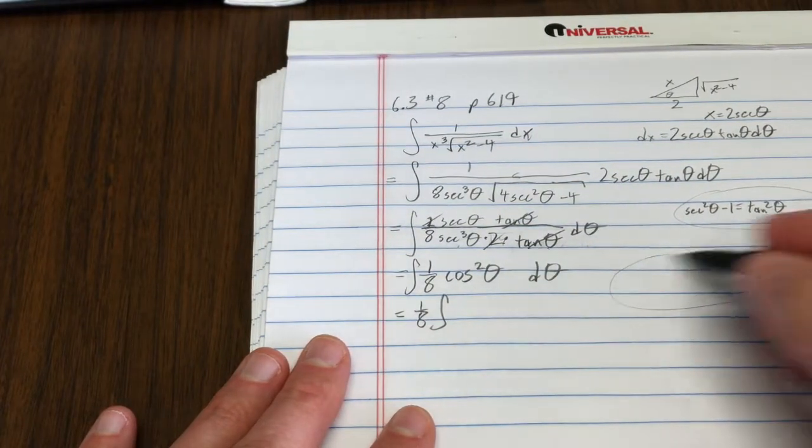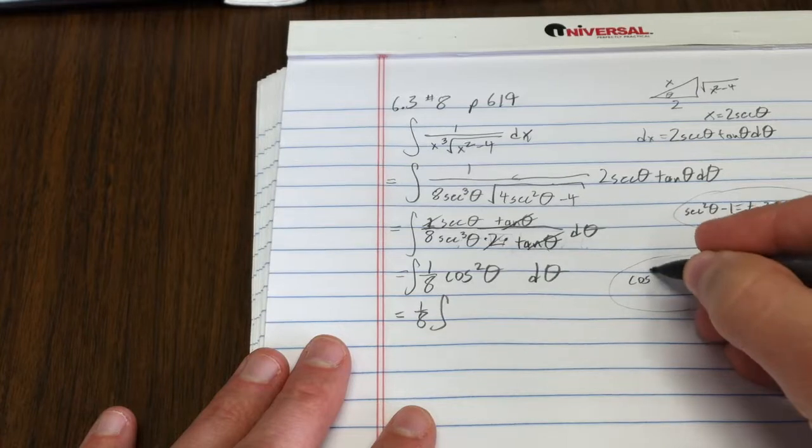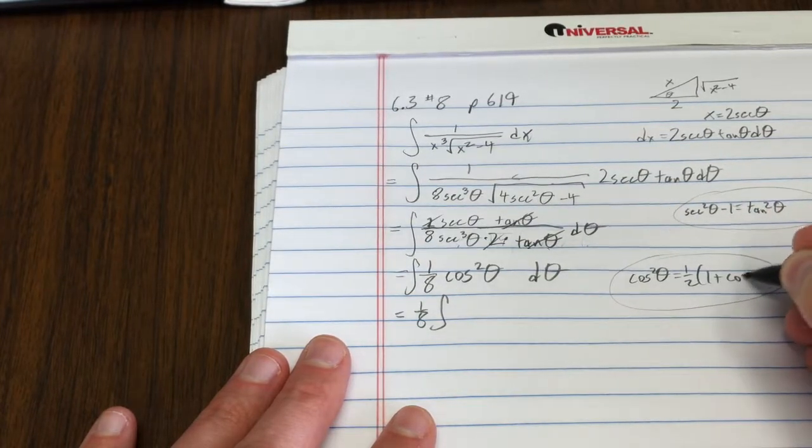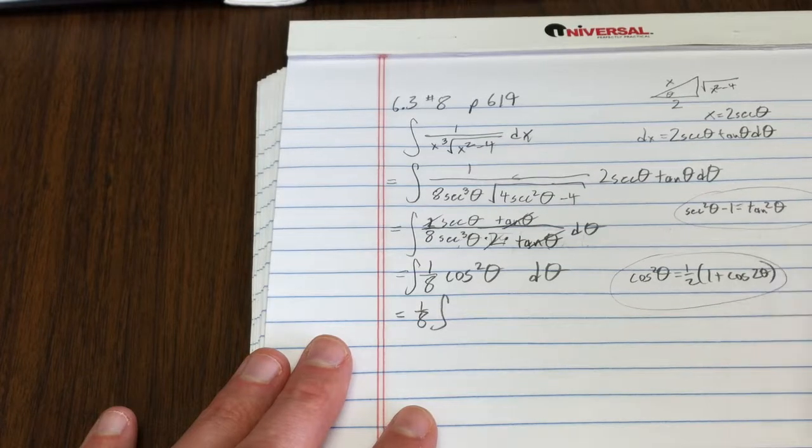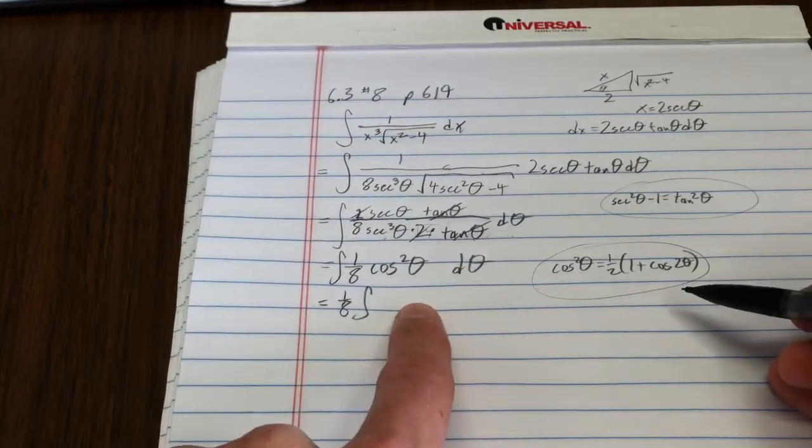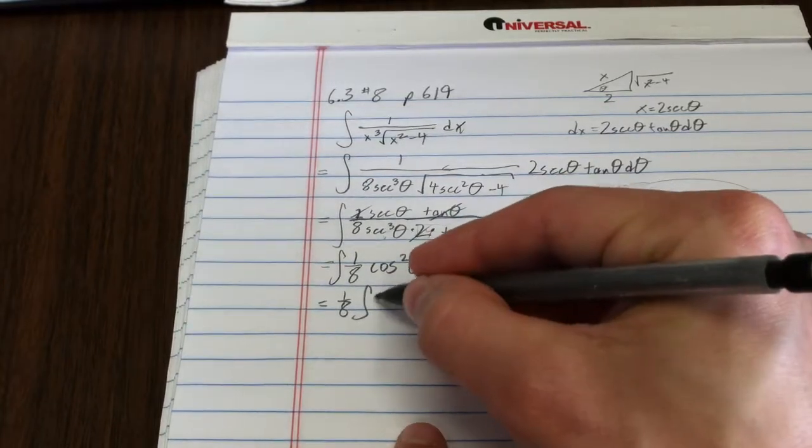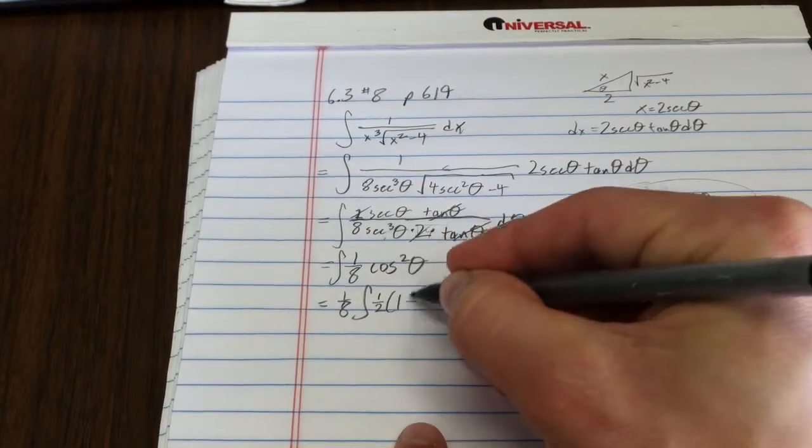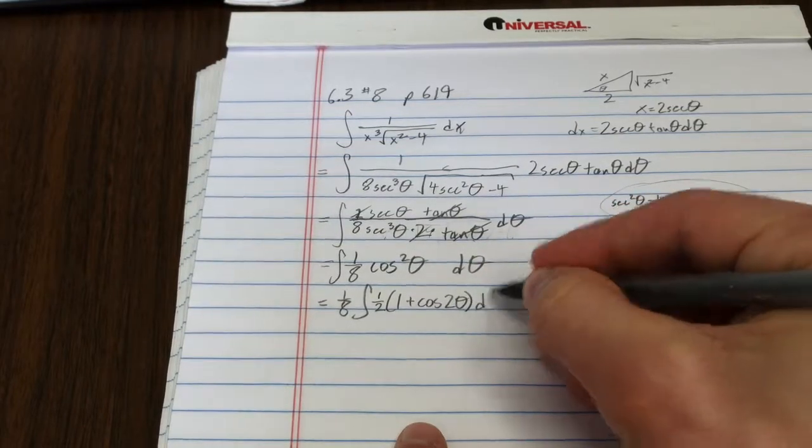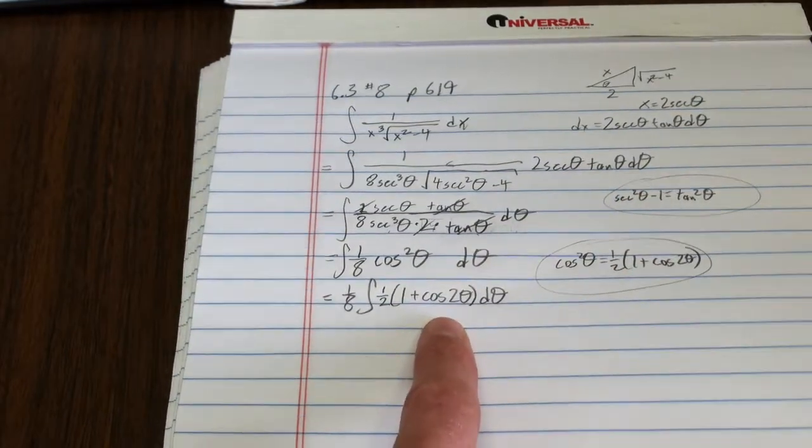So, what is that? You remember that cosine squared theta equals 1 half times 1 plus cosine of 2 theta. That's just a trig identity. So, we're going to use that identity, put it in here.